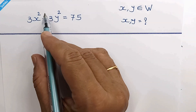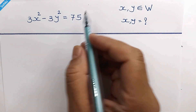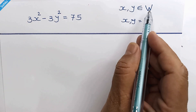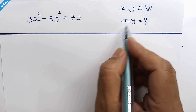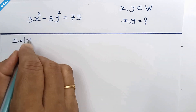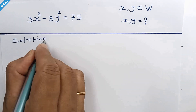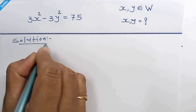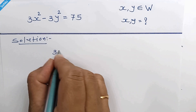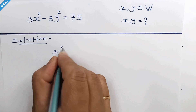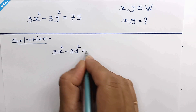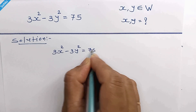Hello friends. This is our question where x and y are whole numbers. Let's solve for x and y. The question is 3x squared minus 3y squared is equal to 75.